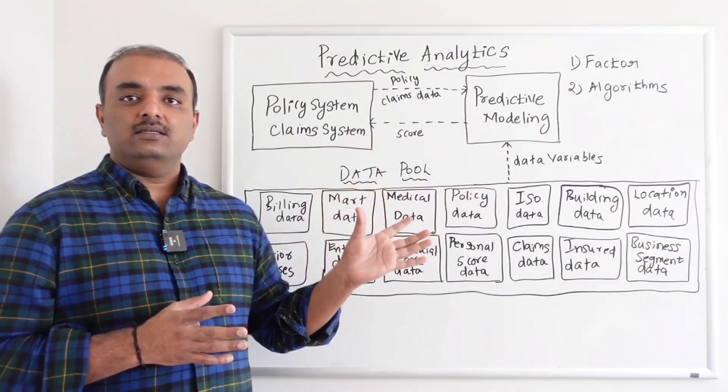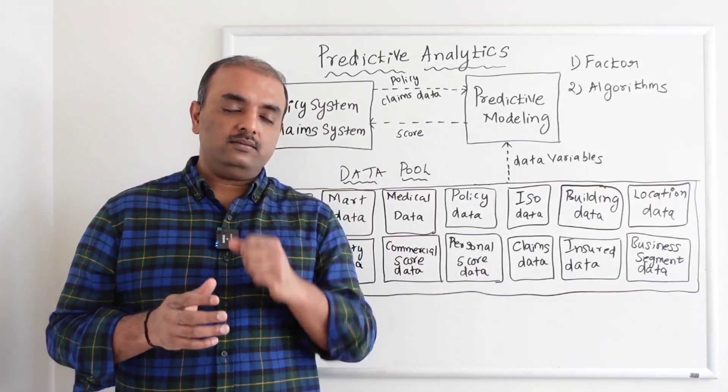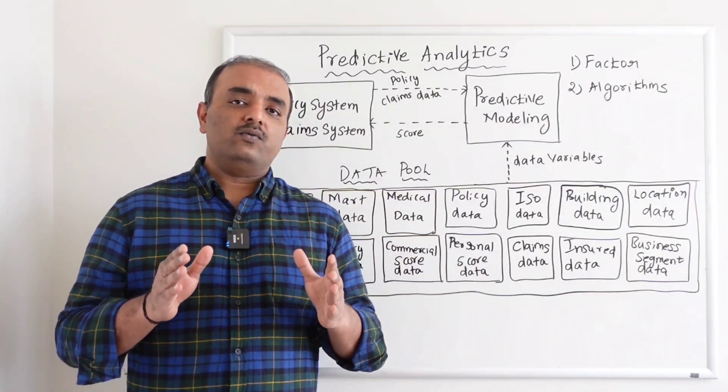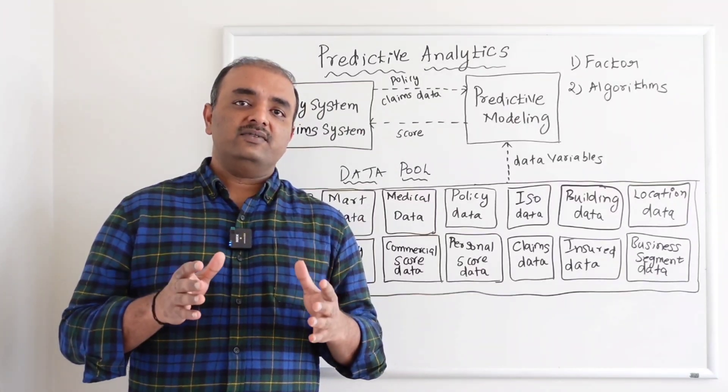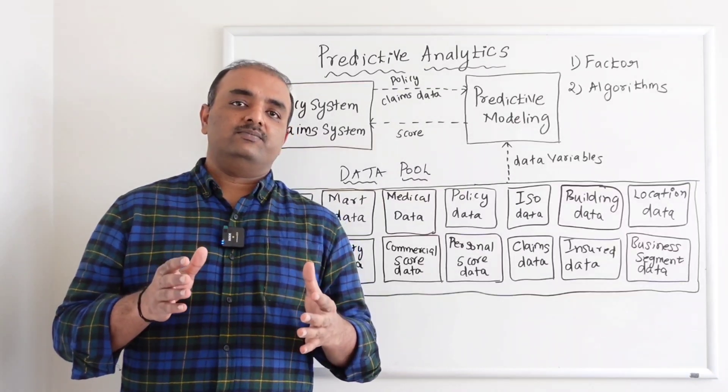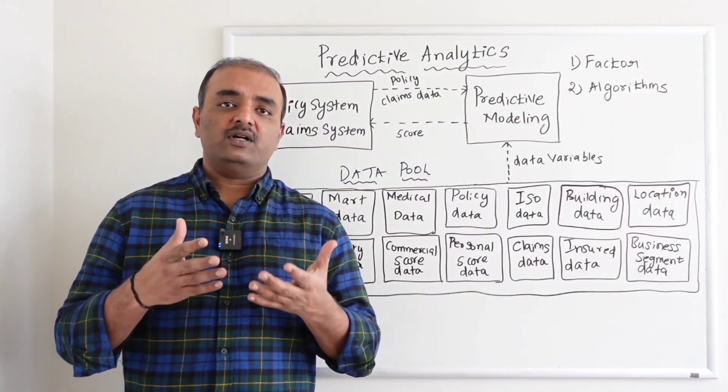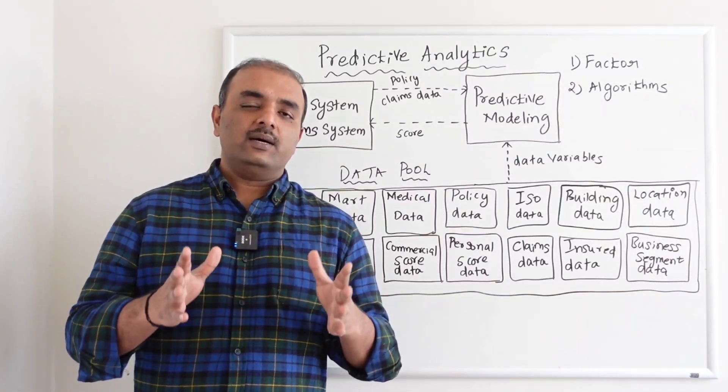The same concept like policy, just that in policy we will have to use this score for determining the premium, whereas in claims we need to use this score for determining if this particular claim has to be automatically processed or if we need someone to look at the claim.